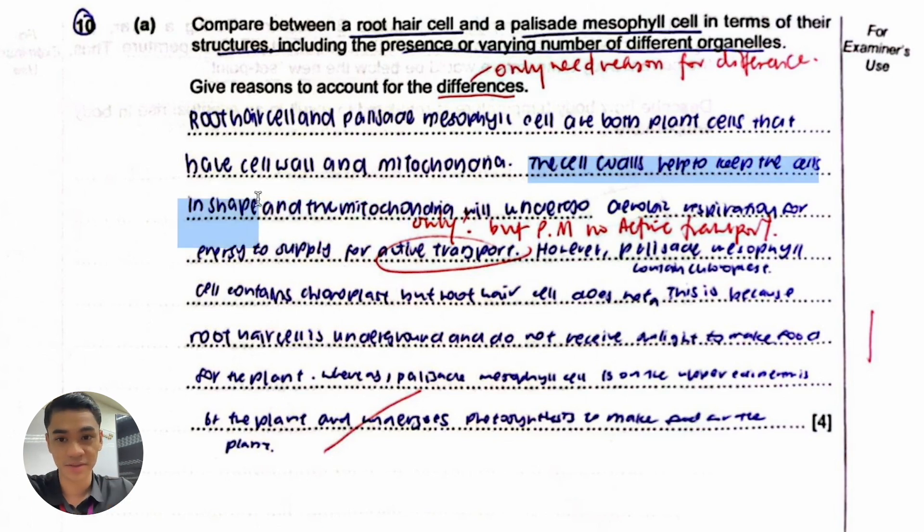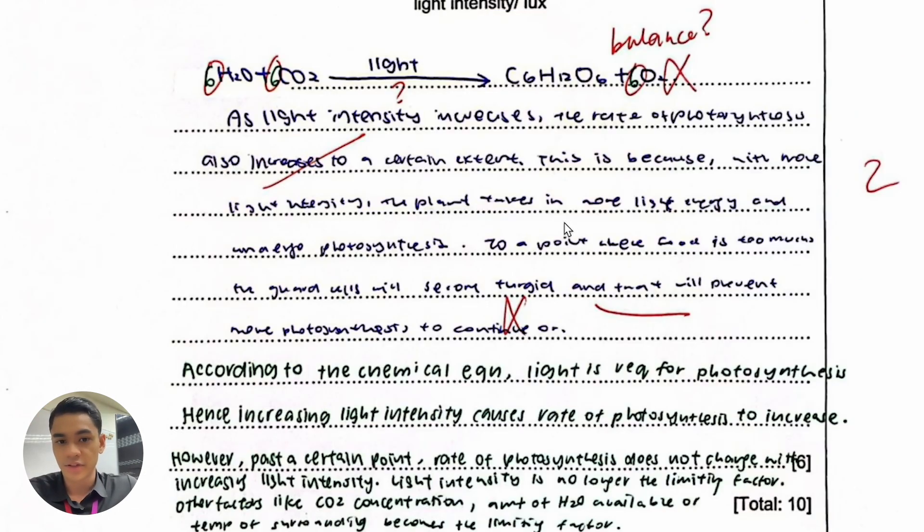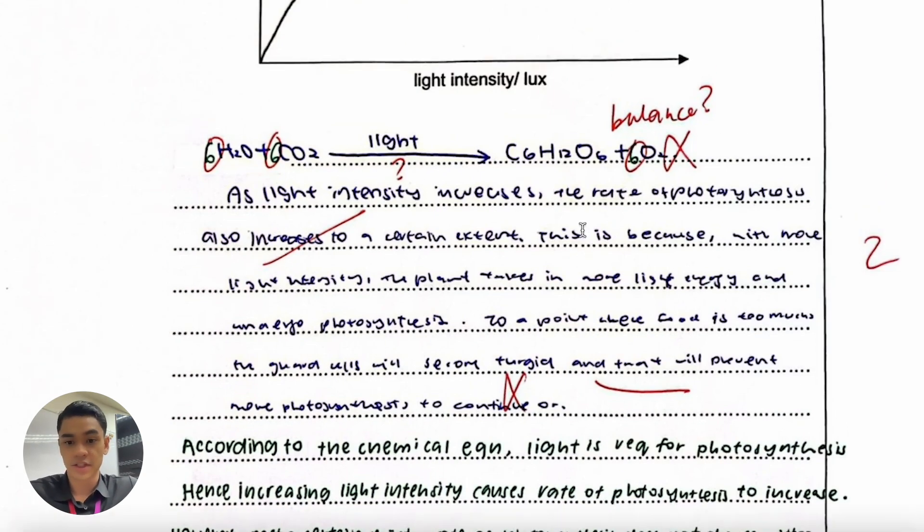This is just a lack of substance, lack of points. Cell walls help to keep the cells in shape, that's not answering the question. Compare means you can give both similarity and difference. So actually saying both have cell walls is okay, but then you don't need to explain why they both have cell walls like to keep the cells in shape and prevent it from bursting. You don't need to explain because the question asks for only account for differences, but don't need to account for the similarity.